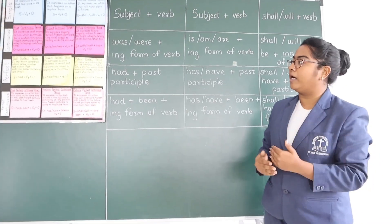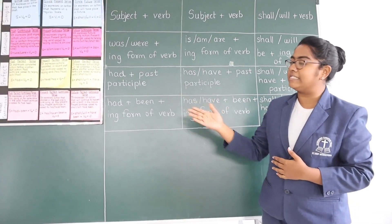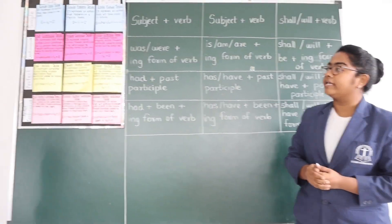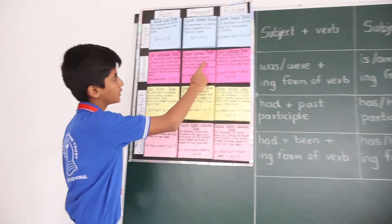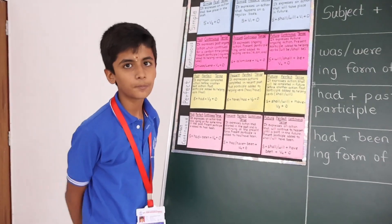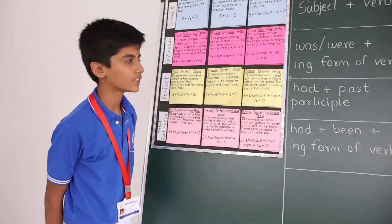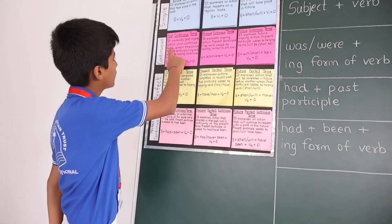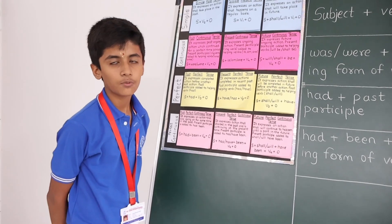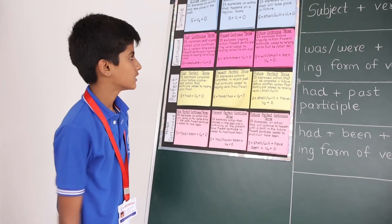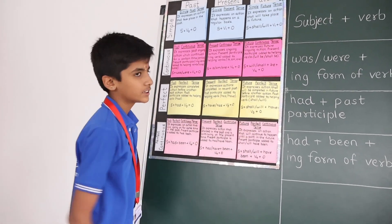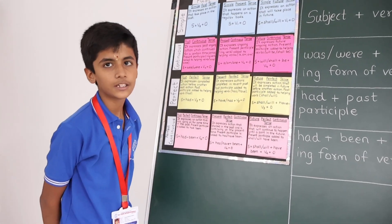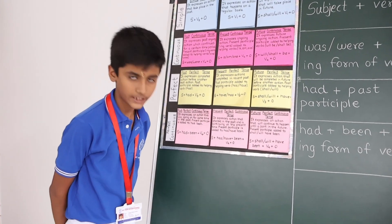I would like to call Saru again for more examples. The example of present continuous tense is: the baby is sleeping. The example of past perfect tense is: I was sleeping. The example of future continuous tense is: I will be writing a letter.